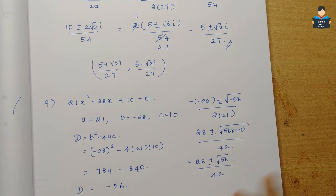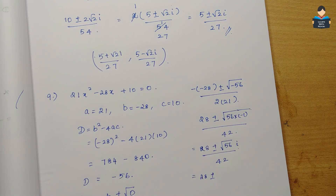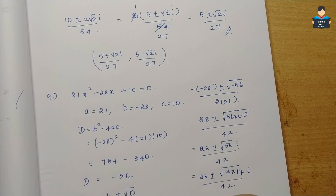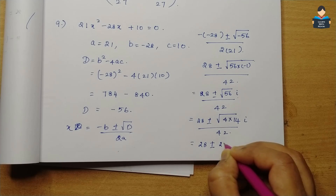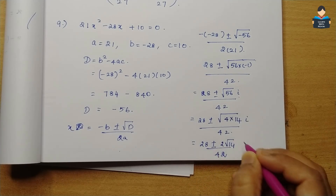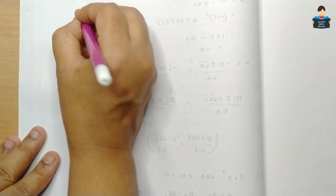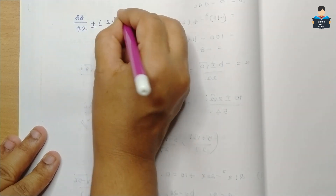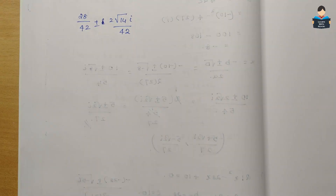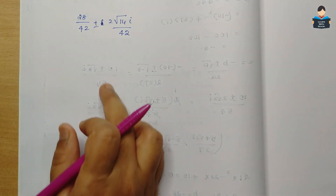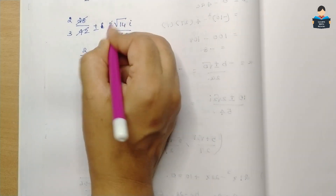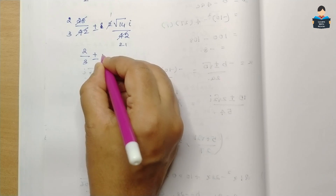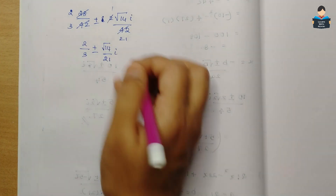√56 = 2√14, so x = (28 ± 2√14 i) / 42. Splitting: x = 28/42 ± (2√14 i)/42. Simplifying each term: 28/42 = 2/3, and 2/42 = 1/21, so x = 2/3 ± (√14/21) i. That is the final answer for question 9.